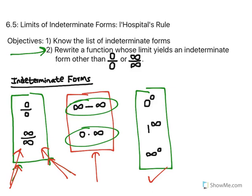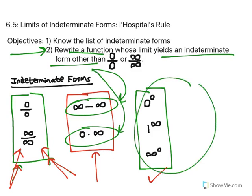The way you deal with problems that give you one of these 2 indeterminate forms is objective 2: rewrite a function whose limit yields ∞ - ∞ or 0·∞. If you get one of the 3 exponential forms on the right, you wouldn't do this procedure — you'd use what we learned yesterday, assuming the limit equals y and taking the natural log of both sides.